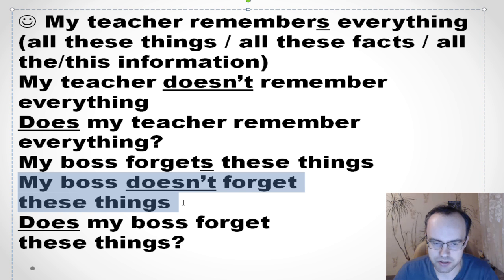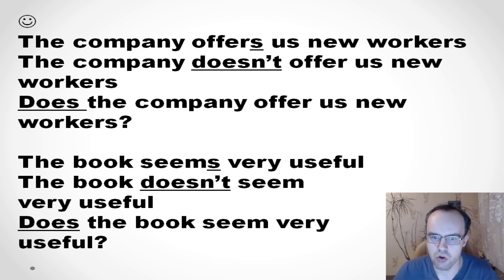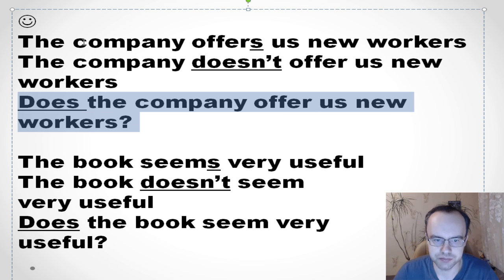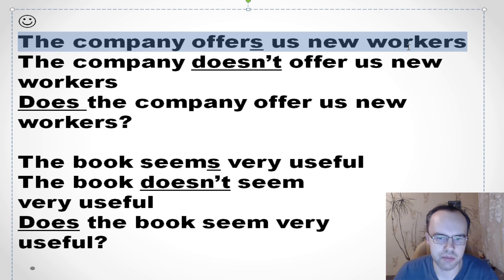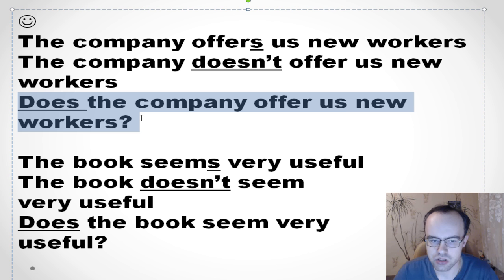'Does my boss forget these things?' We use 'does' because 'my boss' means he. Next: 'The company offers us new workers' — the company means it, so we add S. 'The company doesn't offer us new workers. Does the company offer us new workers?' So remember: when to use S, when not to use S, when to use 'don't' or 'doesn't,' and when to choose between 'do' and 'does' in questions.